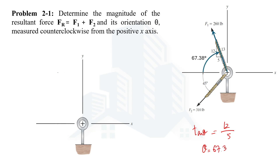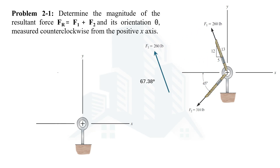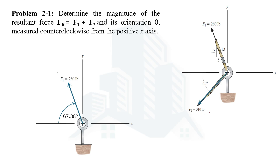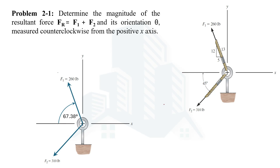Doing the calculations, we get an angle of 67.38 degrees for the first force. The second force has a magnitude of 310 pounds and makes an angle of 45 degrees with the negative x-axis. Let's place both forces on the hook.